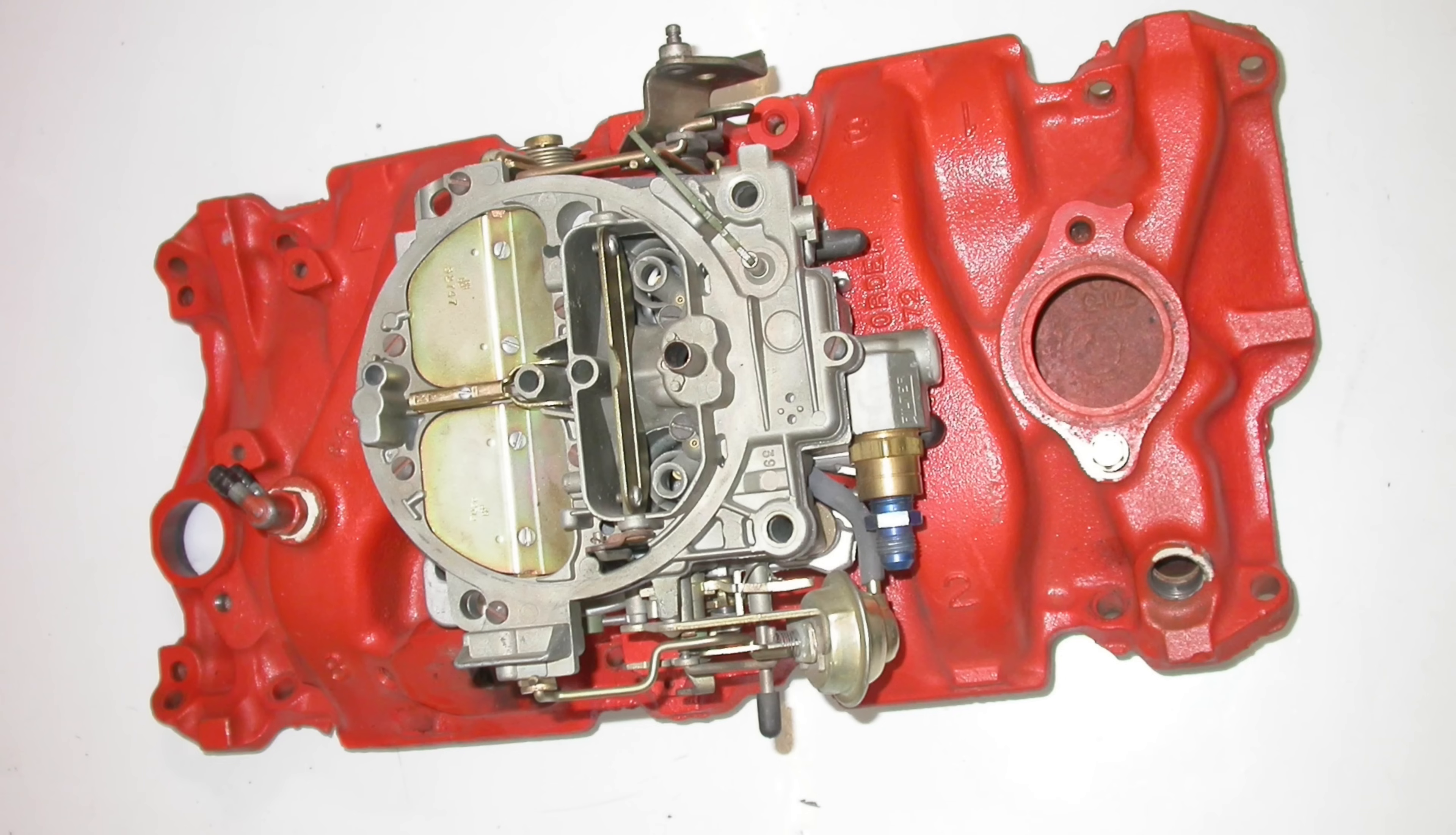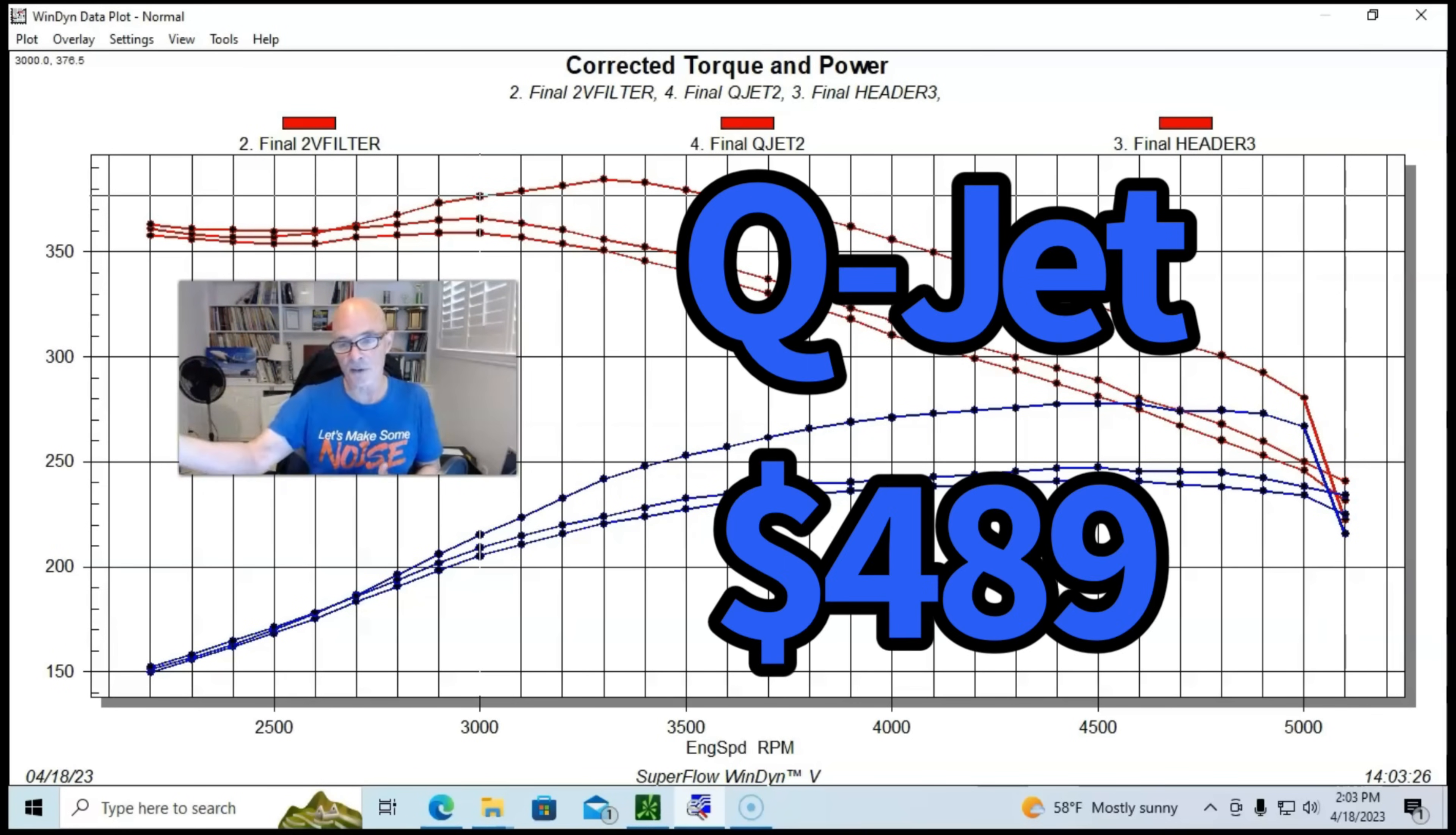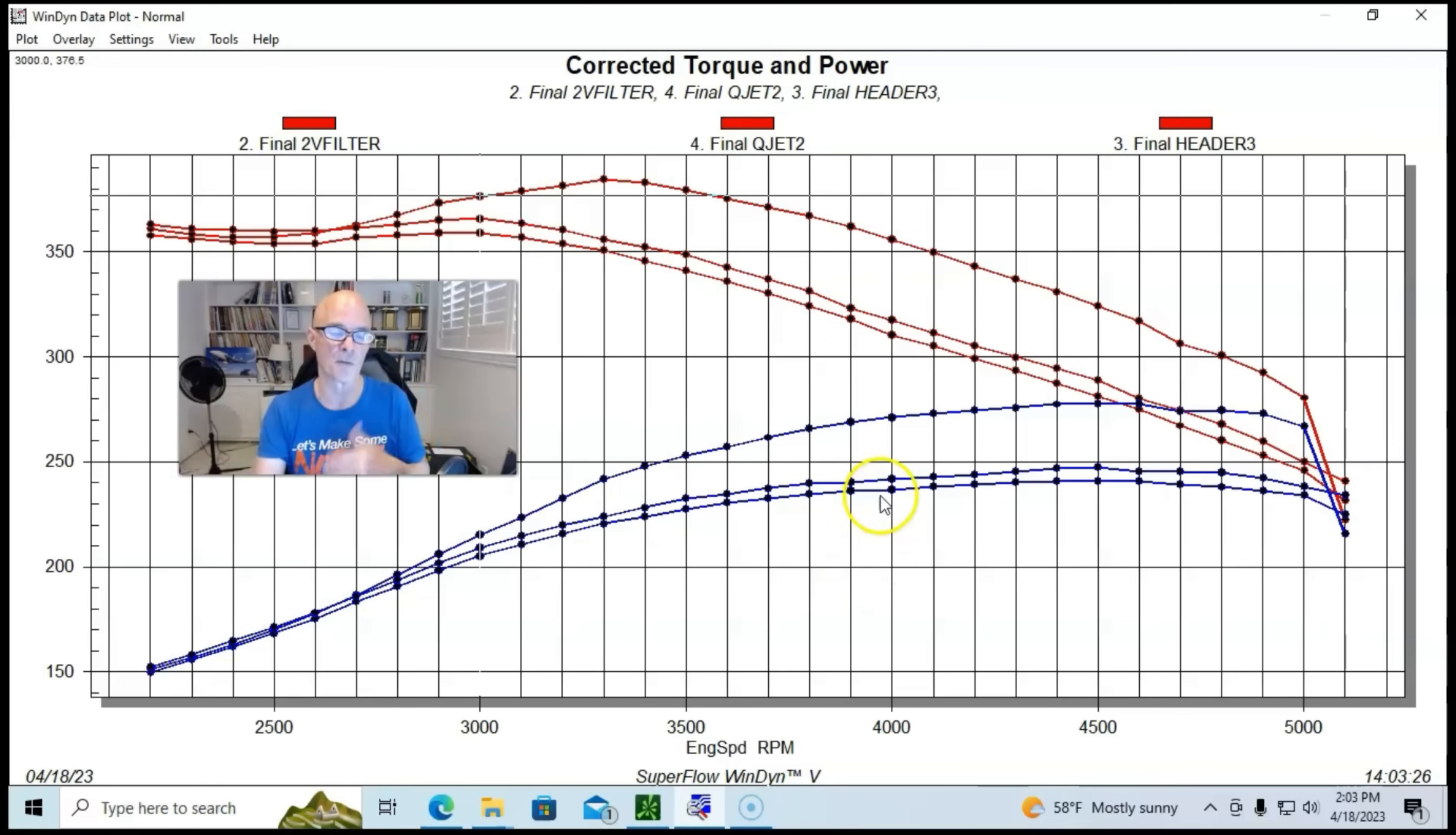What we did was replace the cast iron two-barrel intake manifold and carburetor, got rid of that, replaced it with another stock cast iron four-barrel Quadrajet manifold and a four-barrel Quadrajet. Ours came from the guys at Sean Murphy's, but ideally you would just get that from the wrecking yard with your intake manifold and it would be much less expensive.